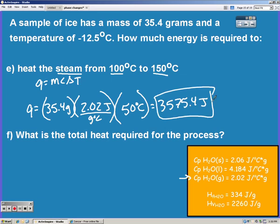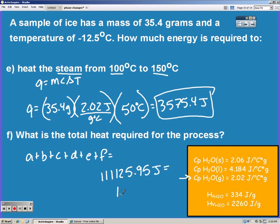Finally, it says what is the total heat required for that process to go from A to E? So all you do is add up all your answers that you got from A to E, and you get this huge number. So convert your answer to scientific notation, and you should get 1.11 times 10 to the 5th. That'll also take care of any rounding that you may have had that was different. So put your answer in three sig figs in scientific notation.